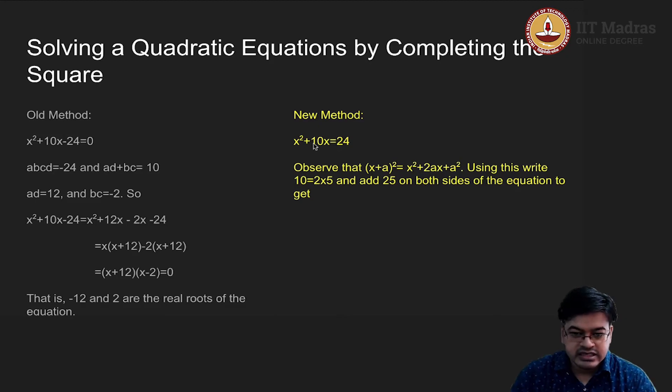To answer that let us equate this 10 to this 2a. So 10 is equal to 2a, therefore a is equal to 5. What will be a²? A² will be 5² which is 25. Now I got a number a² to add and subtract from both sides.